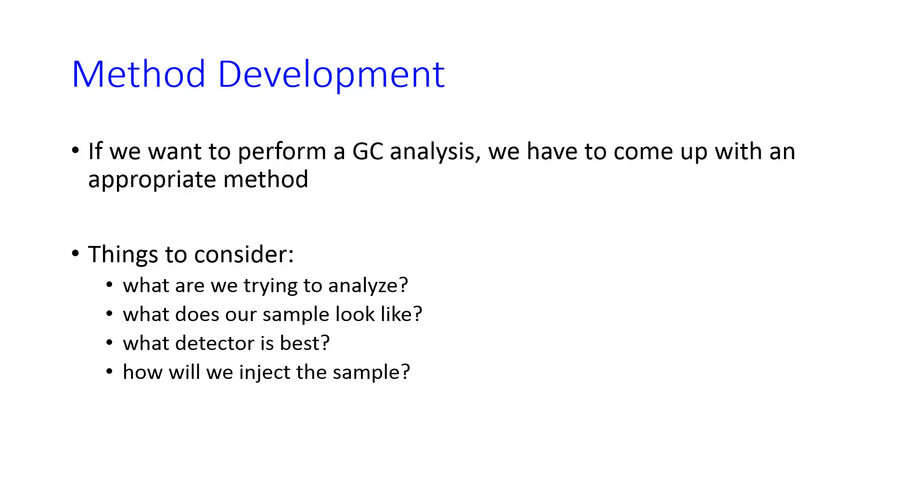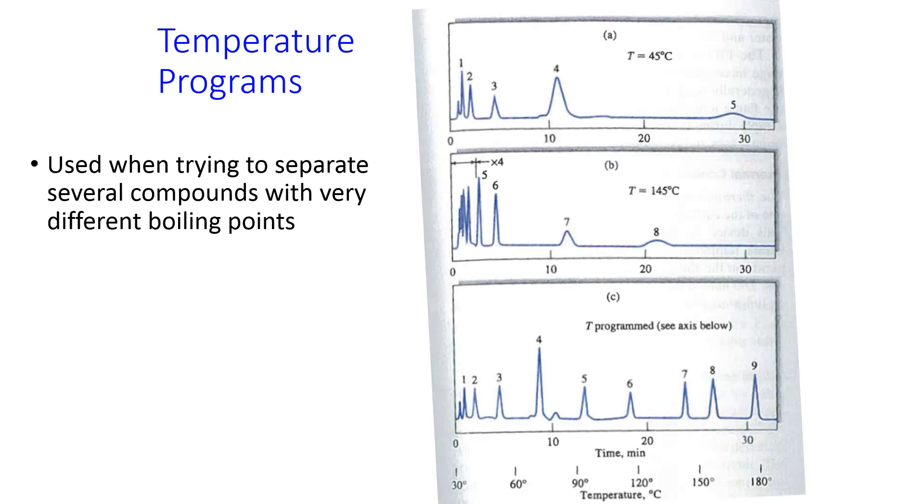The reason to consider especially the identity of the analyte is that if the analytes that we're trying to separate have very similar boiling points, it may be very difficult to separate them. Or if we have very different boiling points, the separation may take a long time. The way to get around this is by using a temperature program, where the temperature starts out low in order to get a little bit of initial separation of things that have very similar boiling points, and then ramps up quickly to a high temperature to drive things off the column that have a high boiling point.